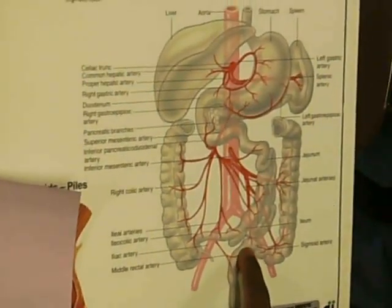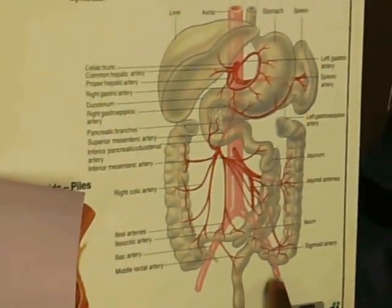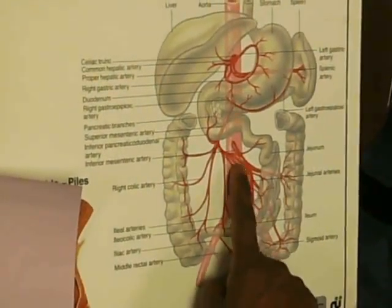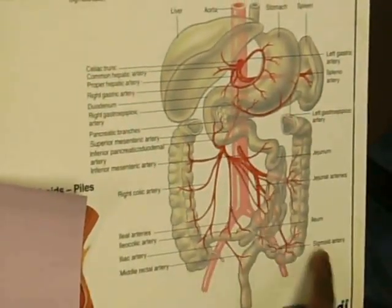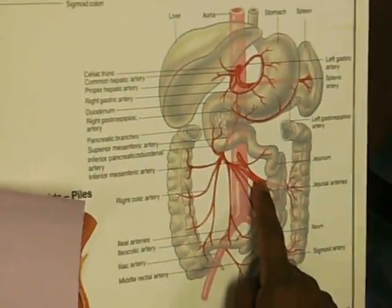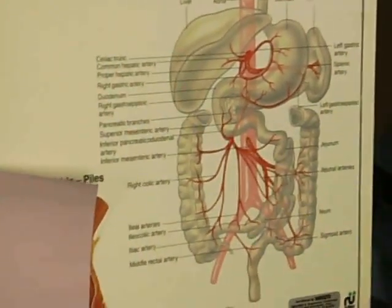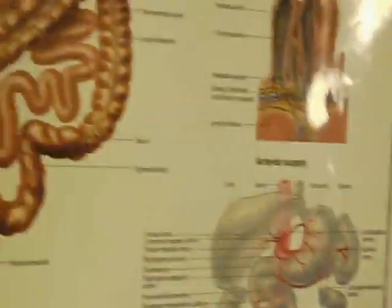The inferior pancreaticoduodenal, and all these are jejunal arteries and these are ileal arteries. In the inferior mesenteric, this will be your left colic artery running there, and these are the sigmoid arteries coming down. The artery runs down as the superior rectal. So to summarize: inferior mesenteric, sigmoid artery, left colic artery.